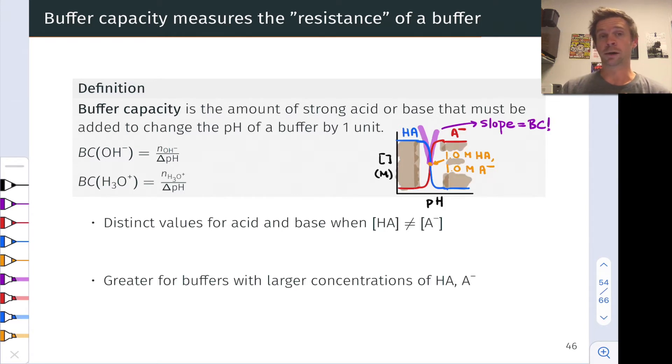Eventually, we reach a point where the buffer is not a buffer at all. At these locations highlighted in brown, we have a very large amount of either HA or A⁻ present. At these pHs, we've got so little of the conjugate acid or its conjugate base that we're not really dealing with a buffer. The ideal range for a buffer is within plus or minus 1 pH unit of the pKa of the conjugate acid in the buffer.